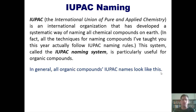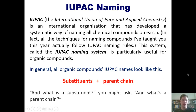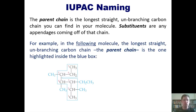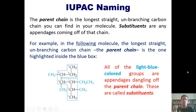In general, all organic compounds' IUPAC names look like this, where we've got a bunch of substituent names followed by a parent chain name. At a general chemistry level — and it goes deeper than this at the organic chemistry level — I'm going to keep it simple. The parent chain is the longest straight unbranching carbon chain that you can find in your molecule. Substituents are any appendages that are dangling off of that chain. For example, in this molecule right here, the longest straight unbranching carbon chain — the parent chain — is the one highlighted inside the blue box. All of the light-blue colored groups dangling off of this parent chain are called substituents.